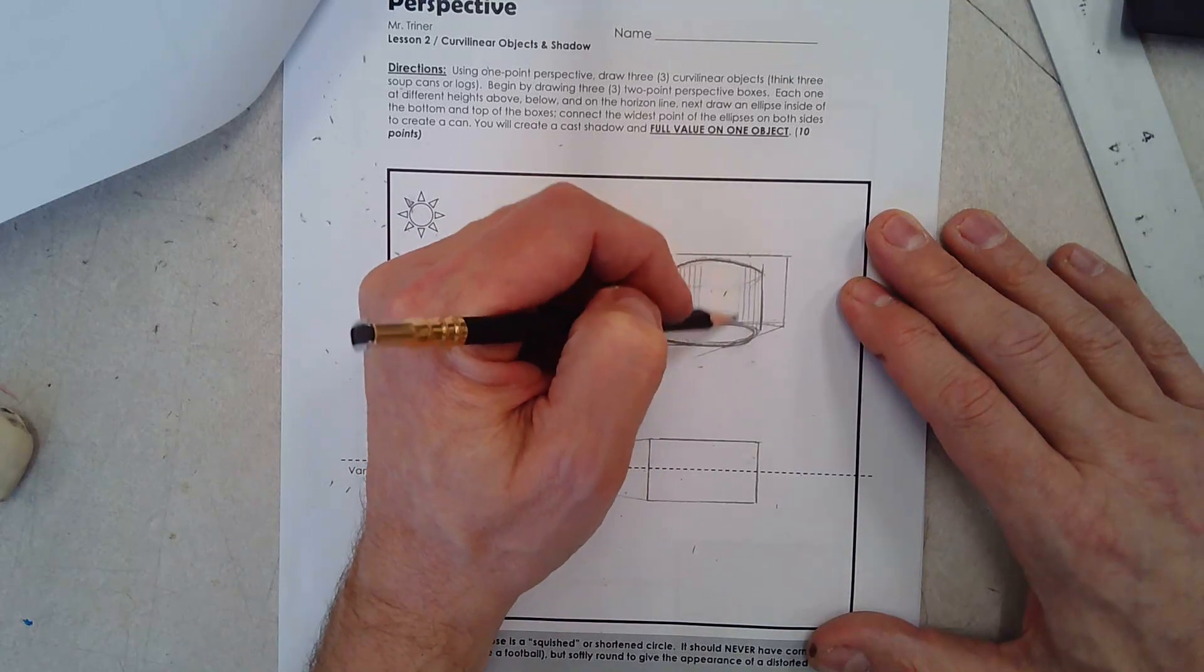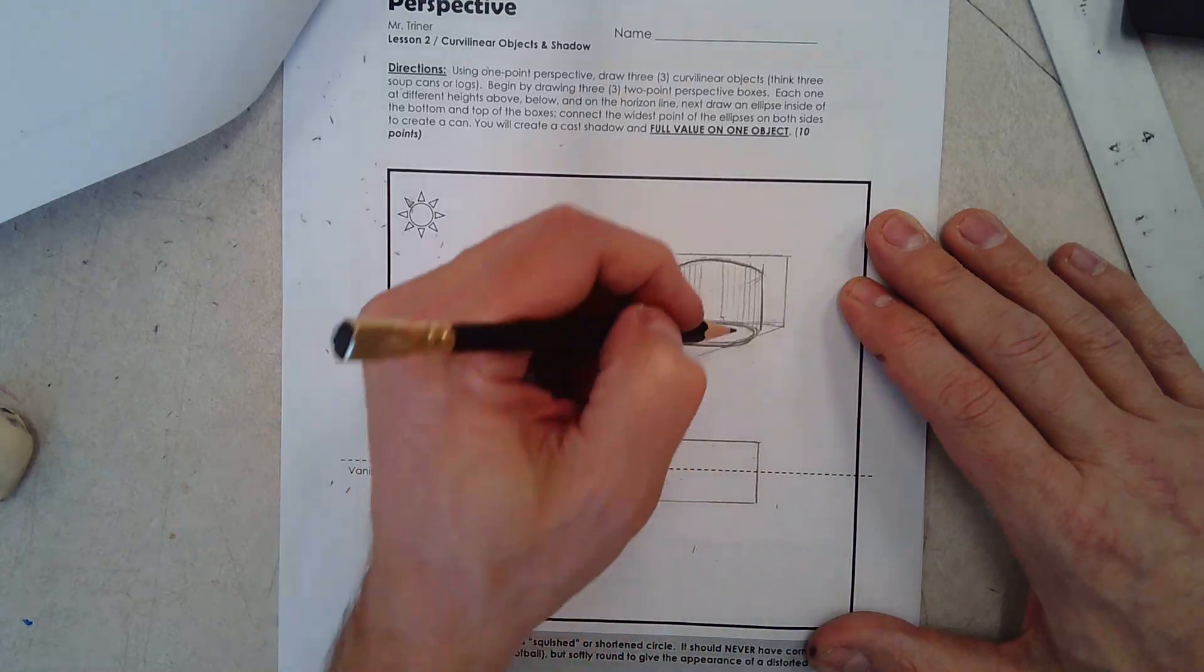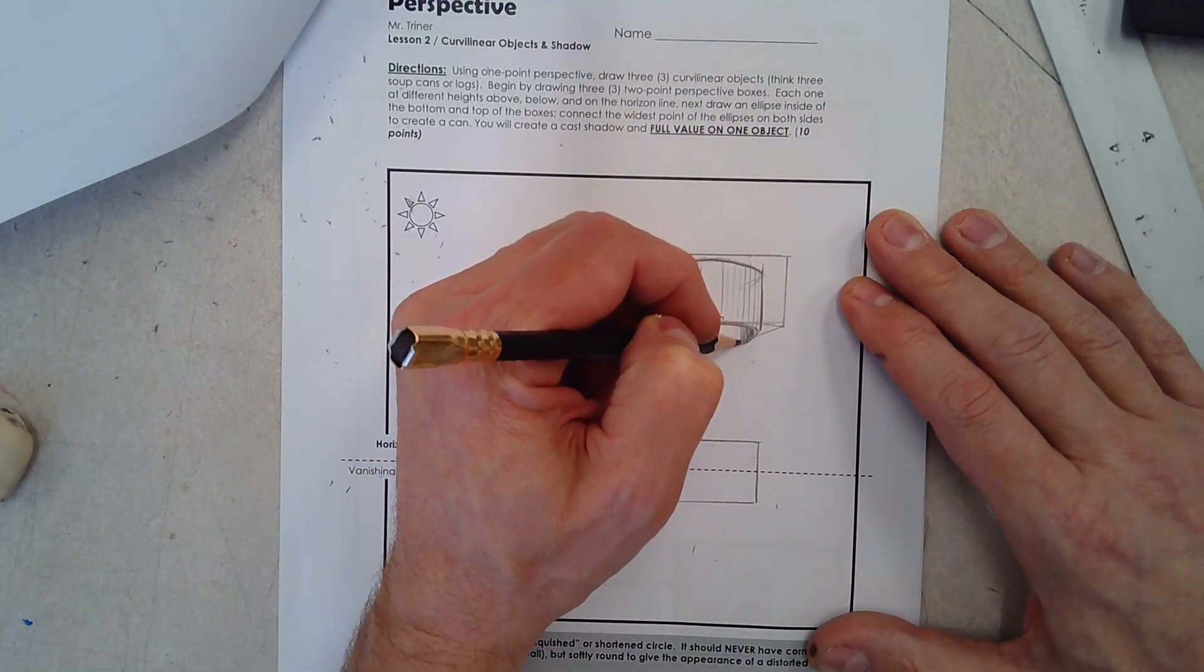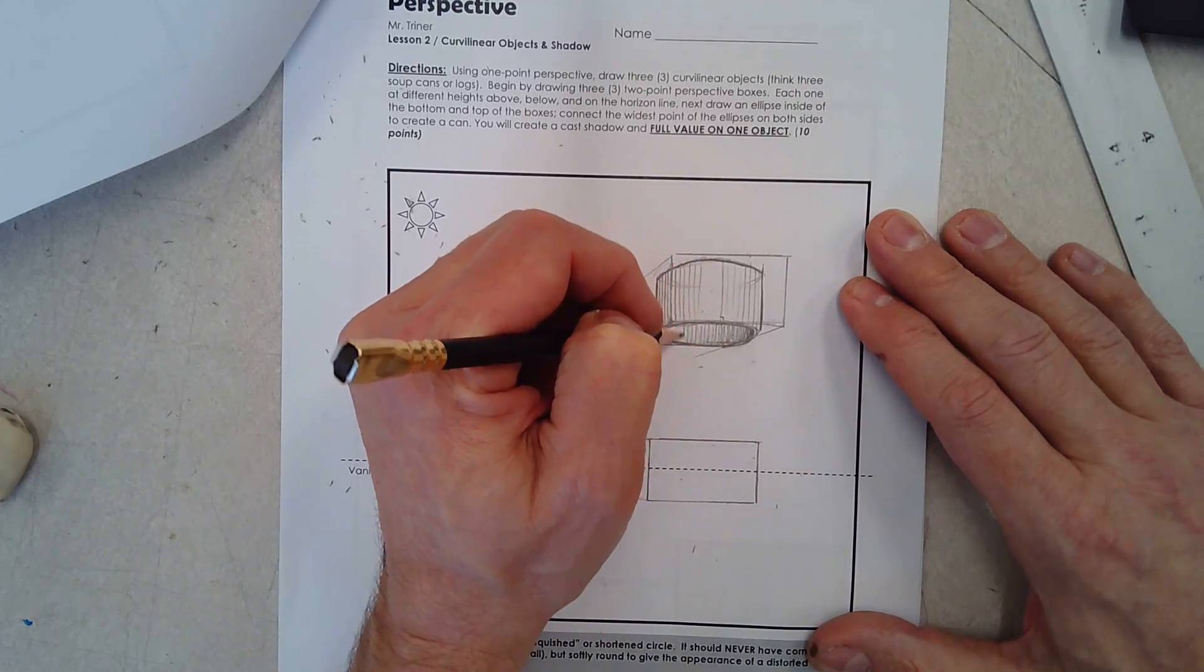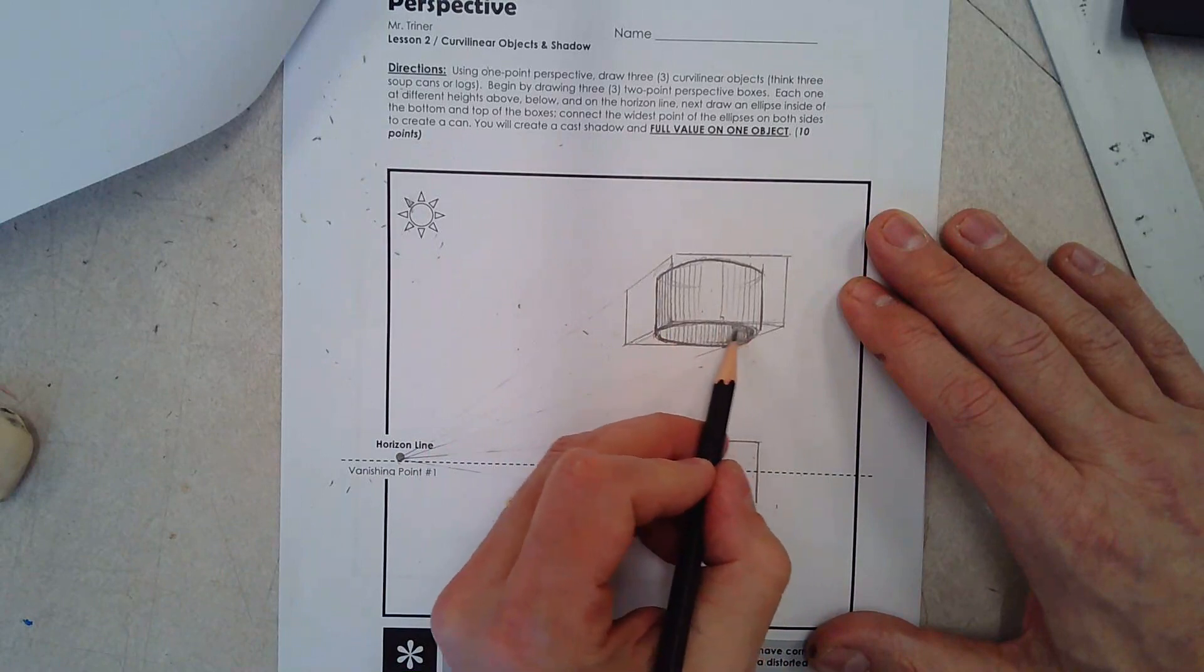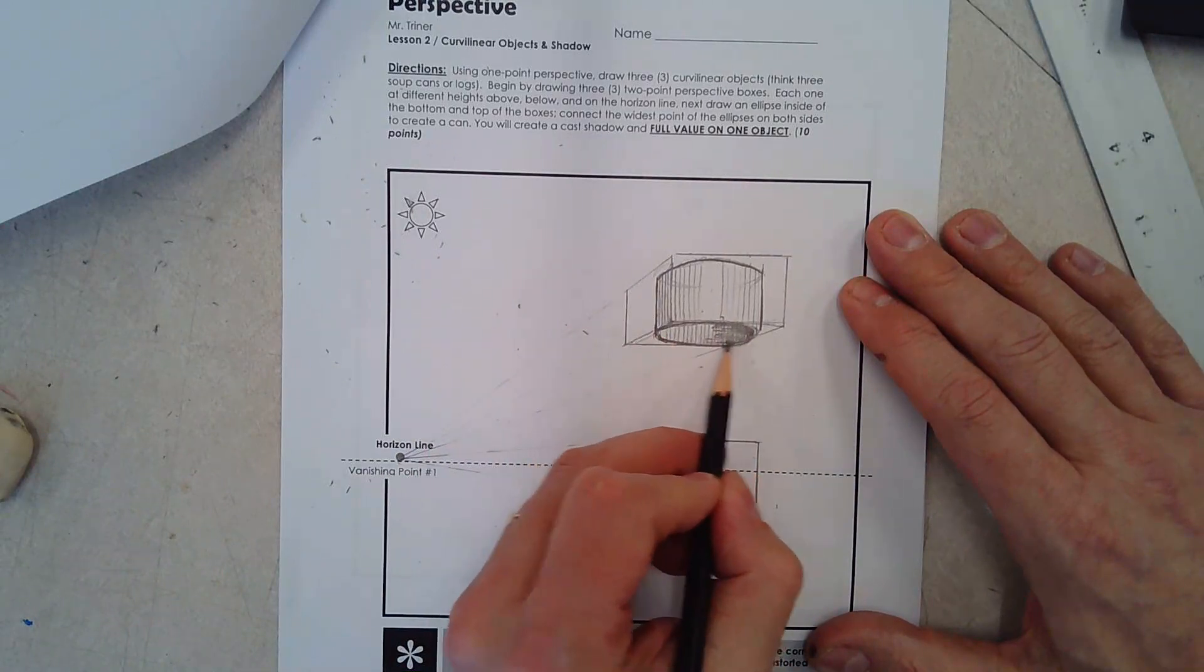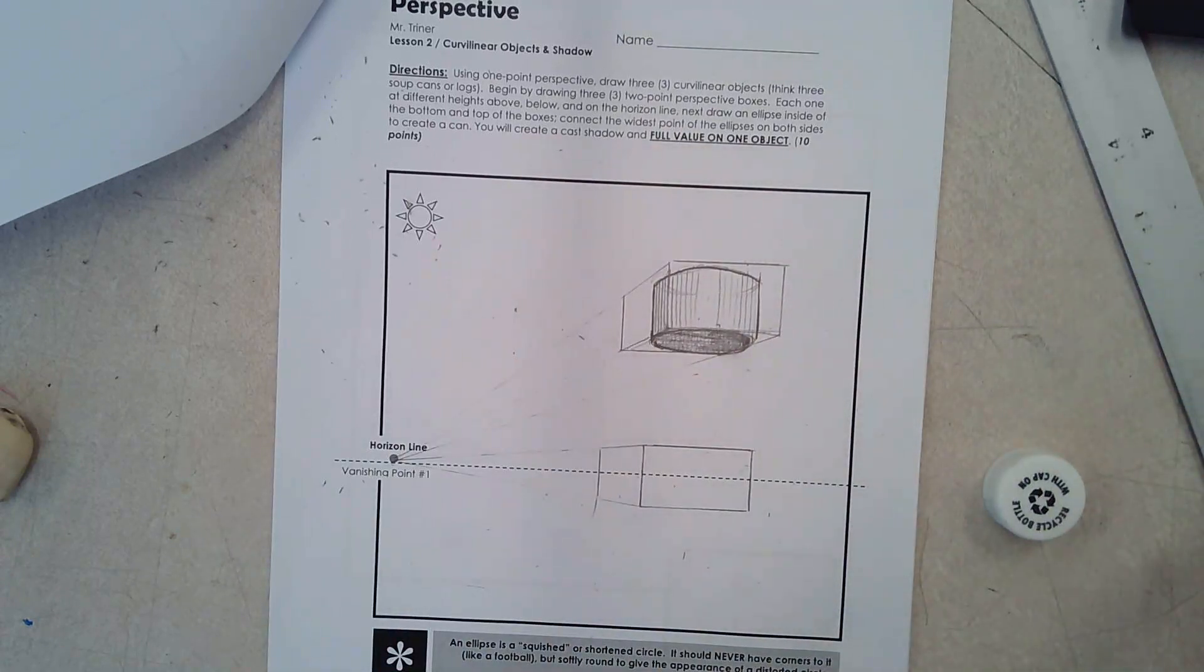You don't have to do this, but maybe this will make it look a little more dimensional. And inside, make a little more darkness to it. So that is a curvilinear object, a rounded object in correct one-point perspective.